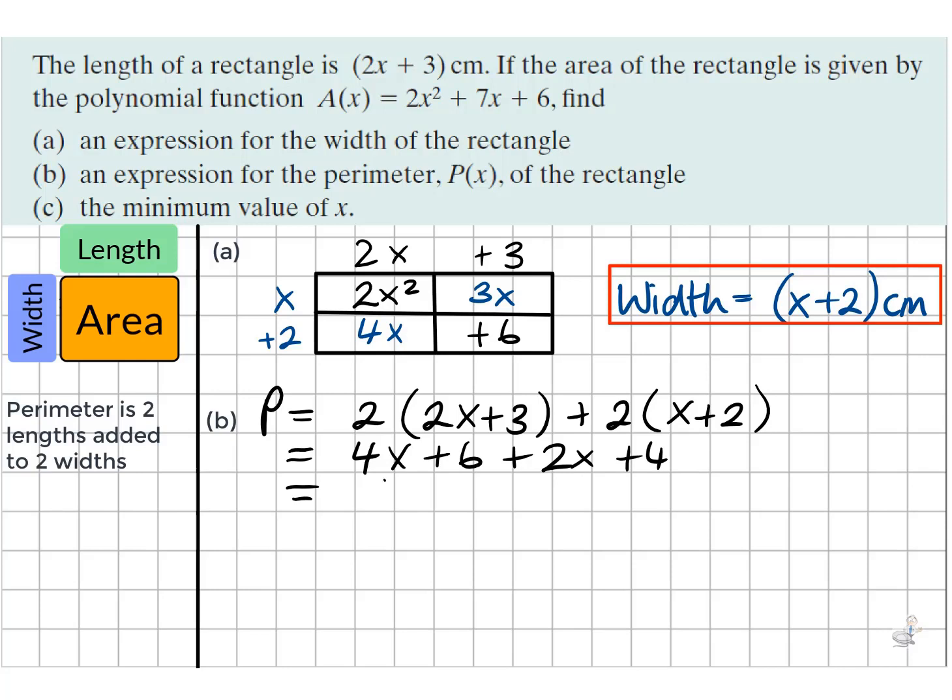When we simplify this expression, we get 6x plus 10. Again, this is in centimeters. Part C, we're looking for the minimum value of x.